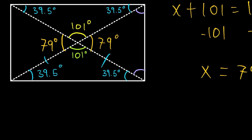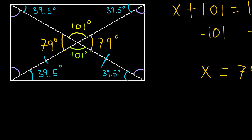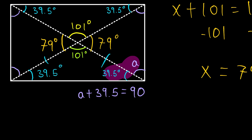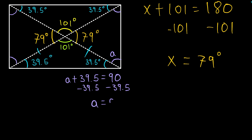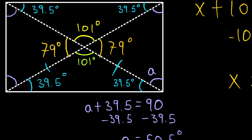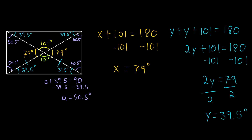Only four angles remain to solve. The purple angle and the blue angle are complementary — they make up an angle of a rectangle which has a measure of 90 degrees. If we call the purple angle a, we have that a plus 39.5 is equal to 90. Subtracting 39.5 from both sides gives a equals 50.5 degrees. We replace a with 50.5 degrees, and the same logic applies to the remaining three angles, which all have the same measure. That's how we solve for all of the angles in a rectangle when given just one.